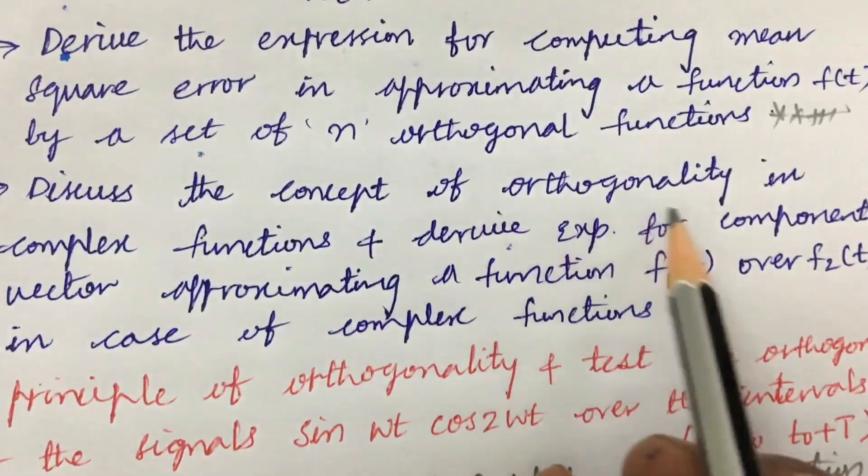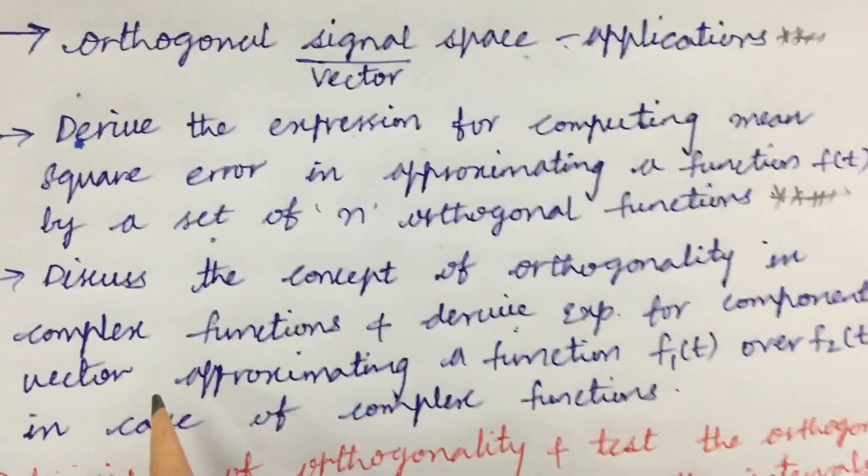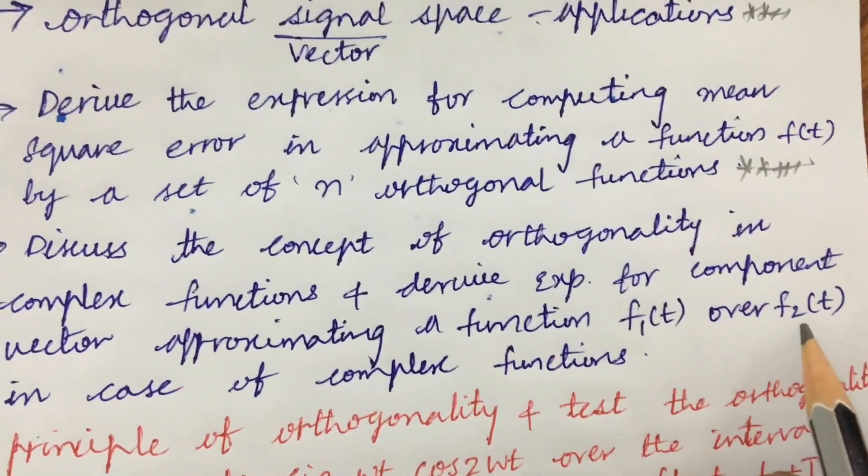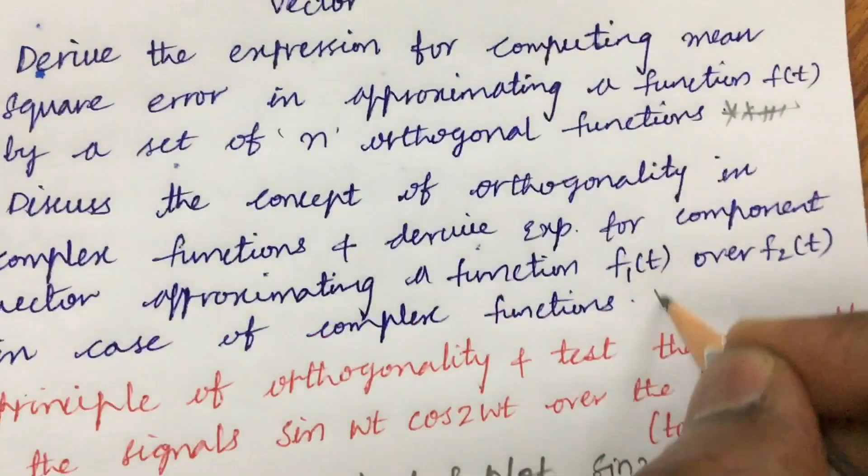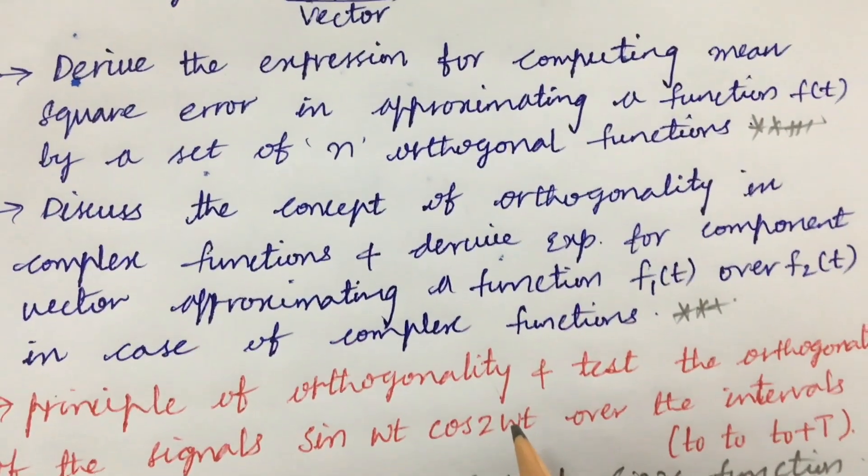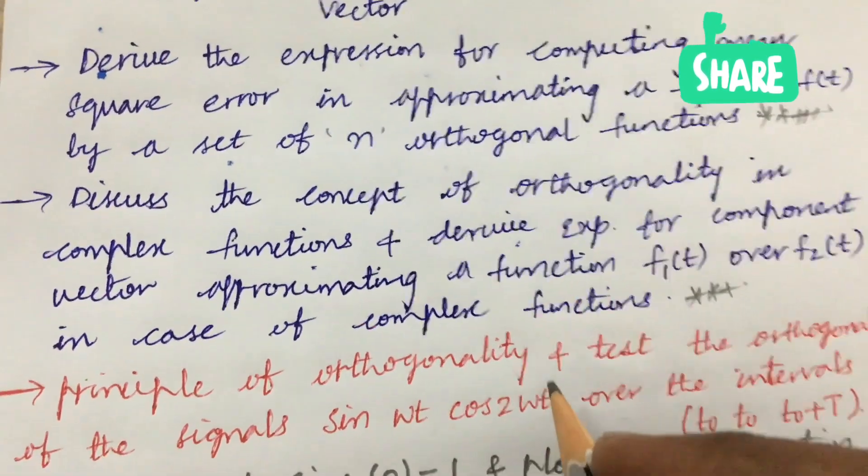Discuss the concept of orthogonality in the complex functions and derive expression for a component vector approximating a function f1(t) and f2(t) in case of any complex functions may be also one of the gunshot question. Dear students from the unit 1 we are going to get 2 questions as per the covid pattern we are supposed to answer any 5 out of 8 questions.